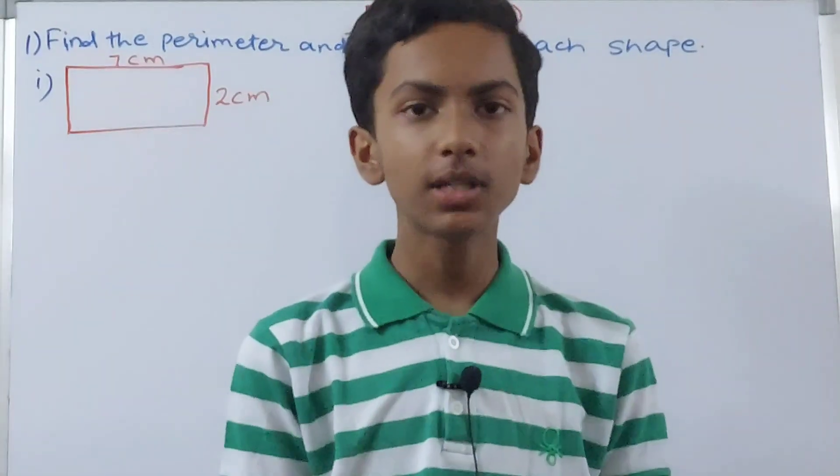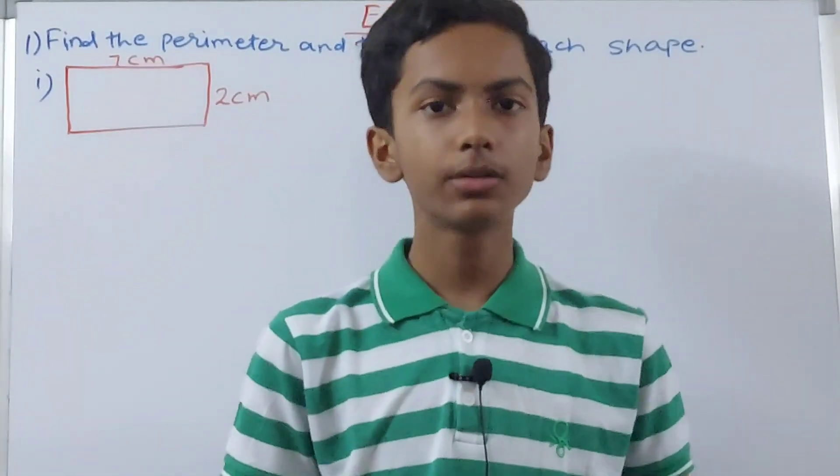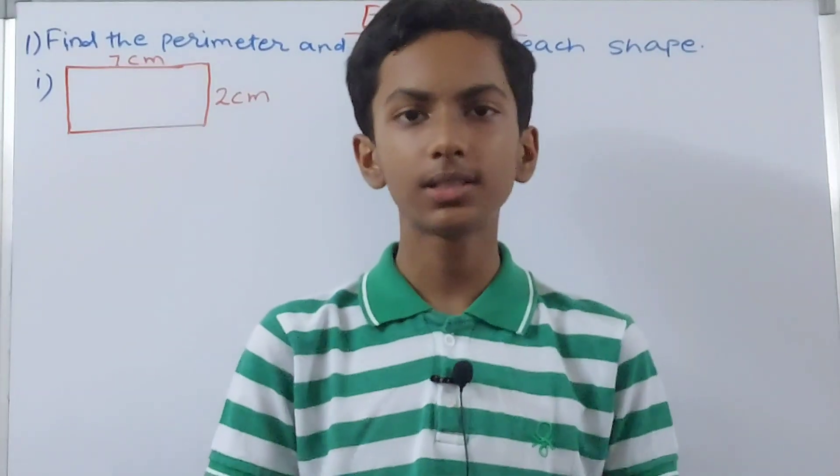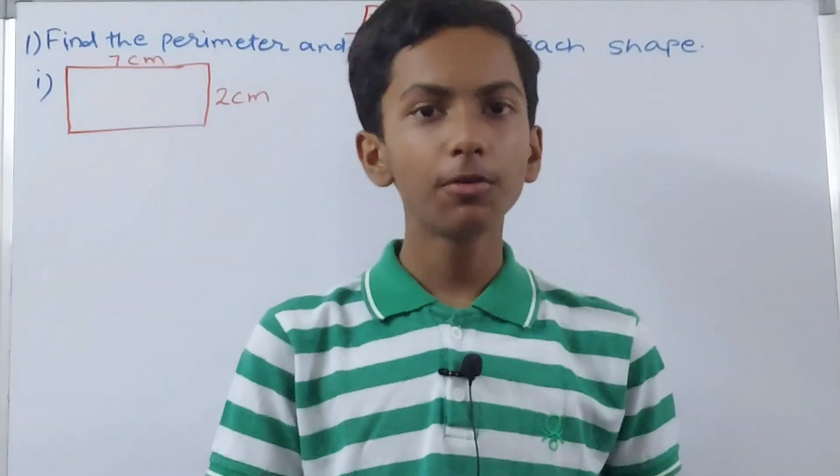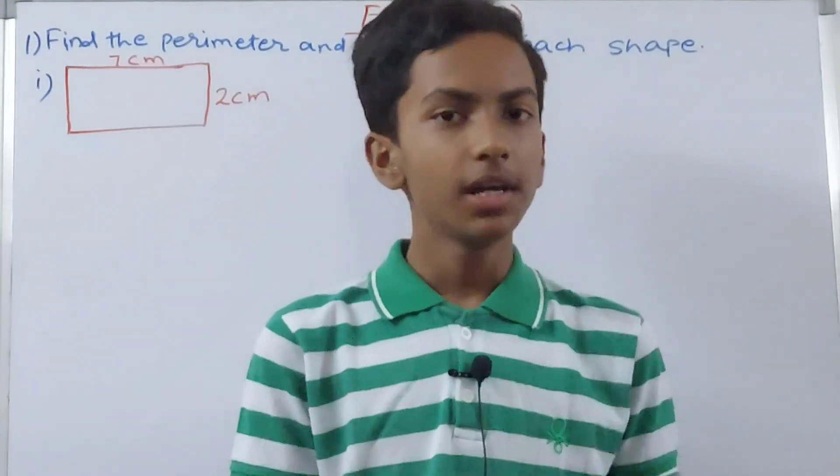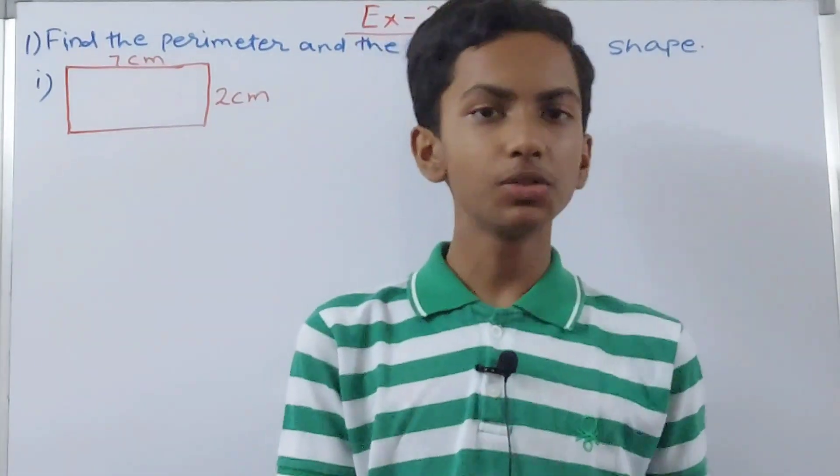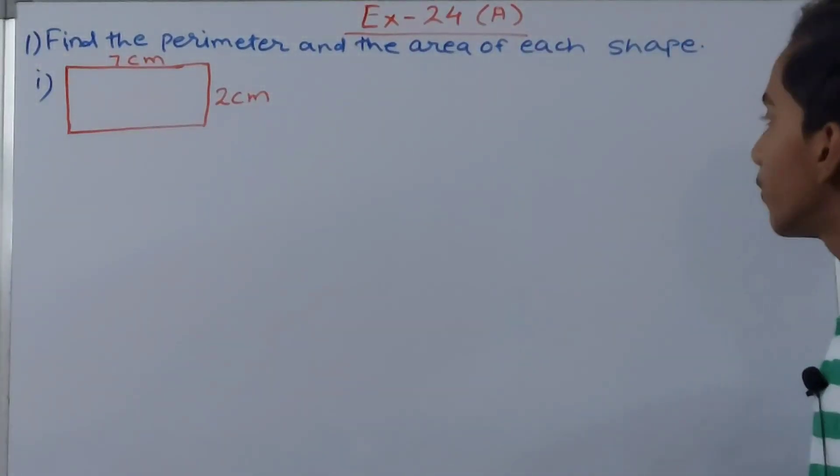Hello friends, welcome back to my YouTube channel. In this video we are going to solve ICSE mathematics class 7, chapter 24 area and perimeter, exercise 24A question 1. This is find the perimeter and area of each shape.